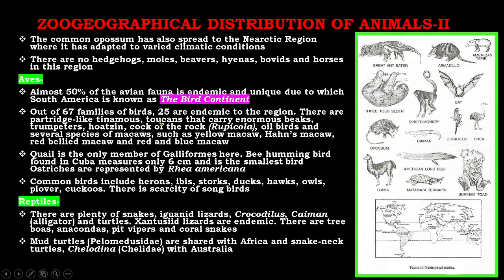Endemic birds include partridge-like tinamous, toucans that carry enormous beaks, trumpeter, hoatzin, cock-of-the-rock (Rupicola), oilbirds, and several species of macaws such as yellow macaw, hyacinth macaw, red-bellied macaw, and red-and-blue macaw. The hoatzin is the only member of Galliformes here. The bee hummingbird found in Cuba measures only six centimeters and is the smallest bird. Ostriches are represented by the rhea Rhea americana.